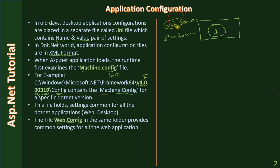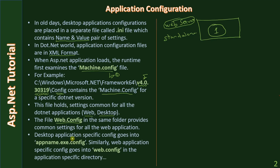If it is a web server hosting multiple websites, then the web.config file in the config folder is checked to load settings common for all web applications served by that web server. Desktop application-specific config goes into app-name.exe.config, while web application-specific configs go into a web.config file in the application-specific directory.